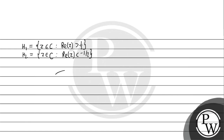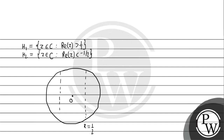मान लेते हैं ये हमारा circle है। यहाँ पर origin है O। यहाँ पर एक line आ रही होगी x is equal to 1 by 2, और यहाँ पर एक दूसरी line आ रही होगी जो कि है x is equal to minus 1 by 2। तो अब देखो, यहाँ पर diameter है इस तरीके का।